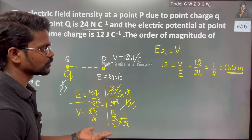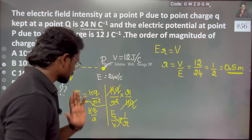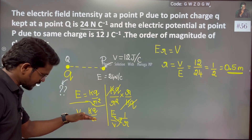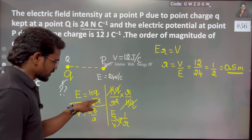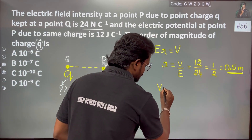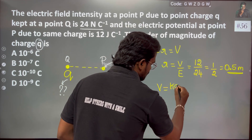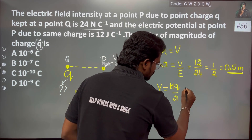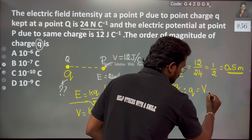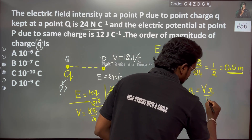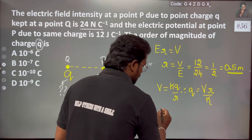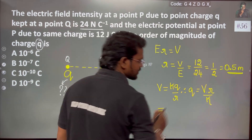It's very simple. We can go with the electric field formula or the potential difference formula. We can go with V which is equal to KQ by R. Therefore, Q is equal to V times R divided by K.